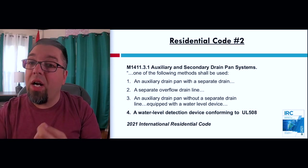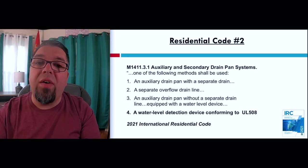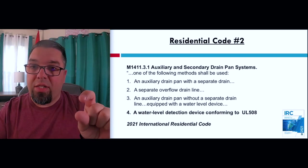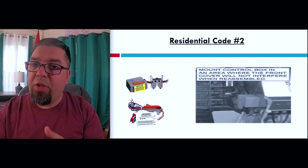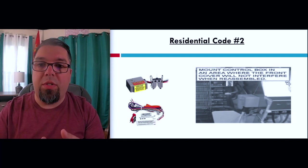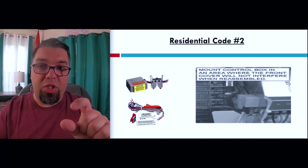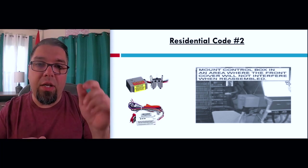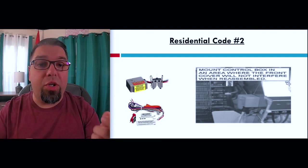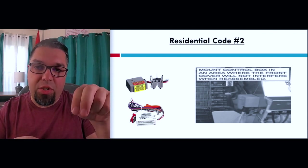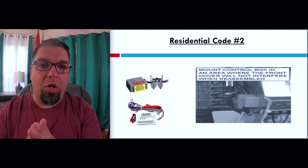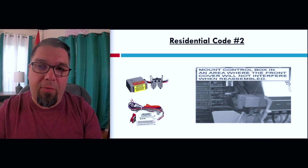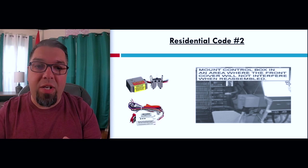The only method that applies to a ductless system would be a water level detection device conforming to UL 508, which goes right into the evaporator pan. There are a bunch of different versions — AquaGuard makes one, RectorSeal makes some. They're small and they tie in to break either the communication line or tie directly to the water detection terminals on the control boards. The sensors monitor water level height and typically mount tight to the right-hand side on a wall mount where the electrical sections are on almost every manufacturer.